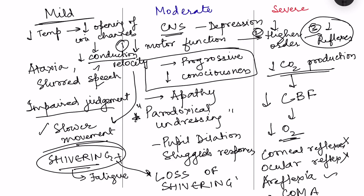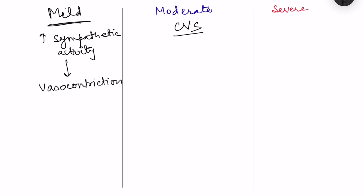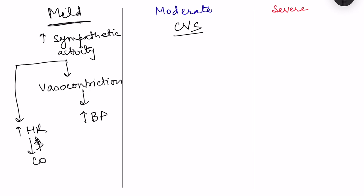In the cardiovascular system, mild hypothermia produces responses aimed at preserving heat. Due to increased sympathetic activity, there is vasoconstriction — the normal response for heat conservation — which moves blood to the core, reducing heat loss from superficial surfaces. Increased sympathetic activity also causes tachycardia, increased peripheral resistance, and increased blood pressure, along with increased cardiac output.